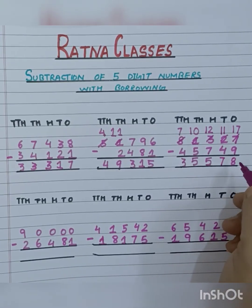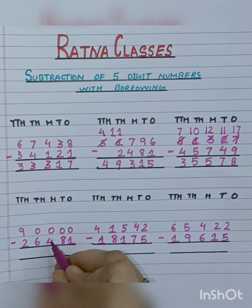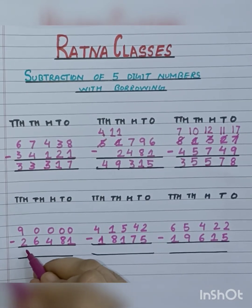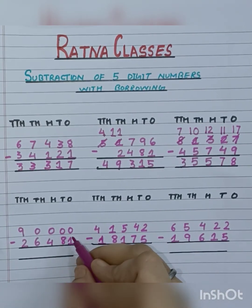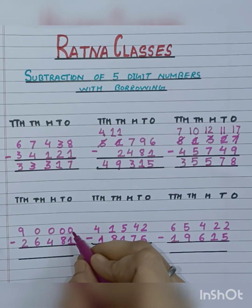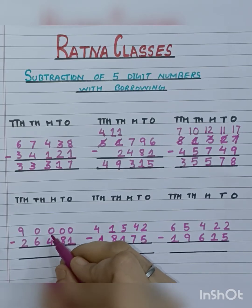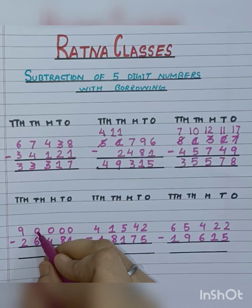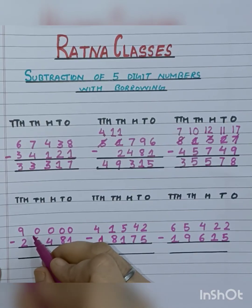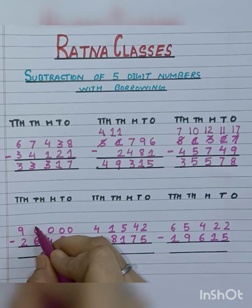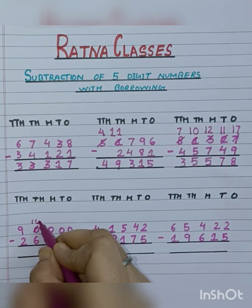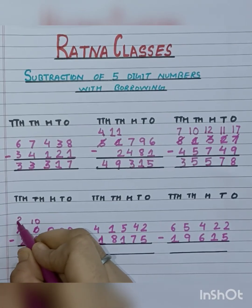Now let's move to the next sum, that is 90,000 minus 26,481. So let's start. Can we subtract 1 from 0? No. But we have to take borrow. But at the 10's place it is also 0, at the 100's place also it is 0, and at the 1000's place also it is 0. So first of all we take borrow from the 10,000 place. Here it is given 9. So if we borrow 1 from here, then 0 will become 10 and 9 will become 8.